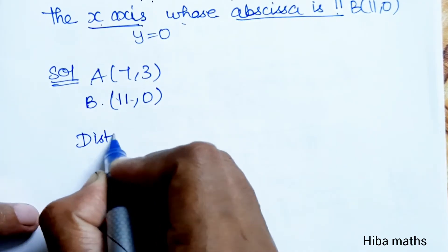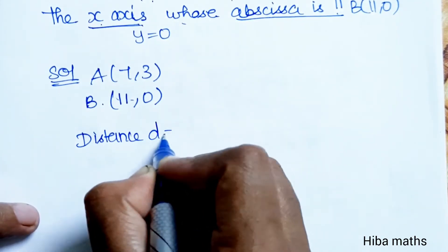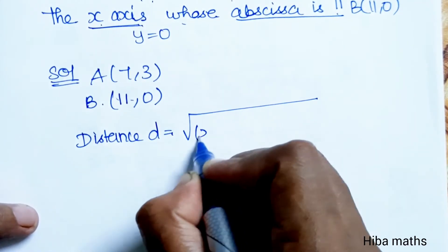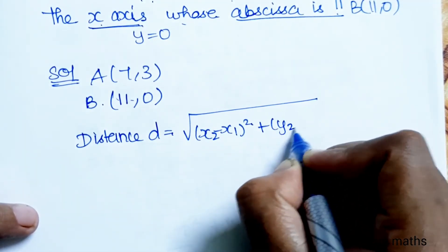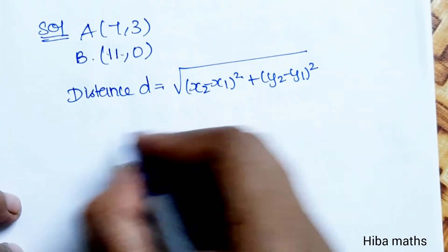Using the distance formula: distance d equals the square root of (x2 minus x1) whole square plus (y2 minus y1) whole square.